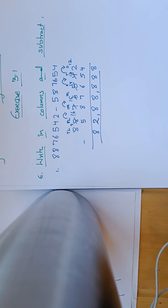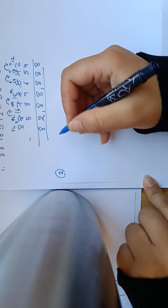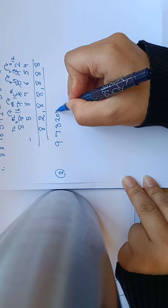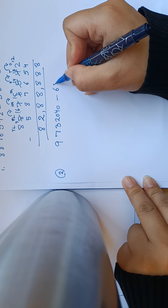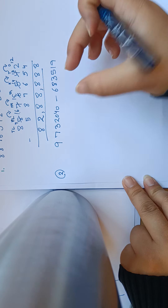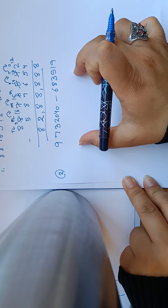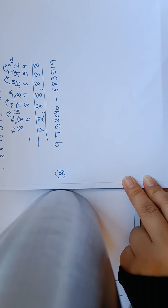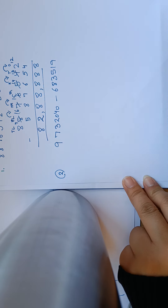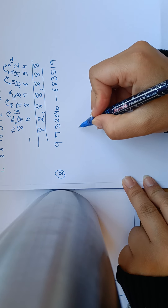तो ये था आपका पहला question। अब हम एक और part करते हैं ताकि आपको और अच्छे से समझ आए। हमारे पास number है 9,732,040। इसमें से 683,519 को minus करना है। Subtraction में बड़ा number पहले लिखते हैं — addition में ऐसा नहीं होता, addition में number का order matter नहीं करता।